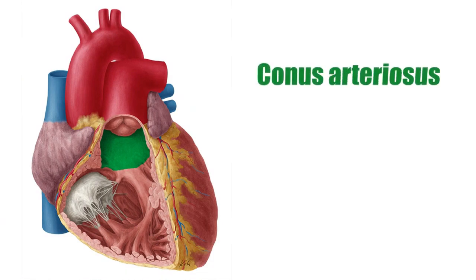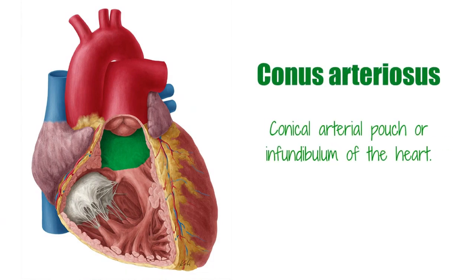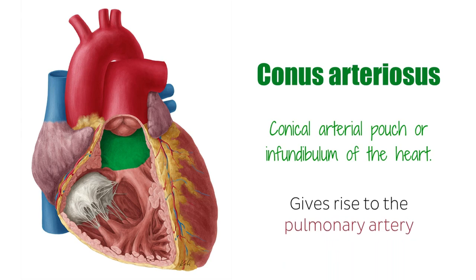The conus arteriosus, also known as the conical arterial pouch or infundibulum of the heart, can be found in the upper left corner of the ventricle and gives rise to the pulmonary artery.